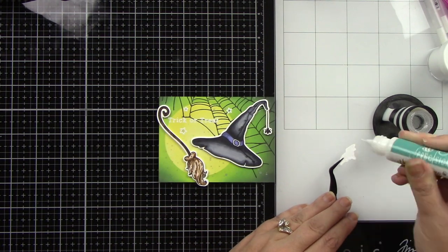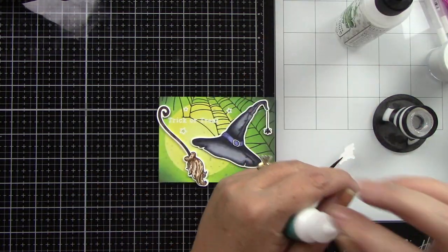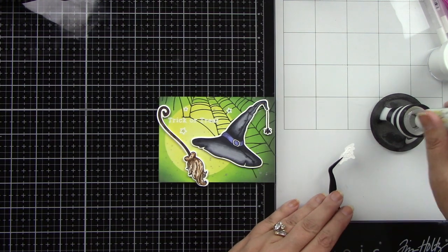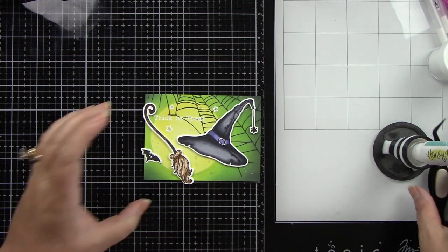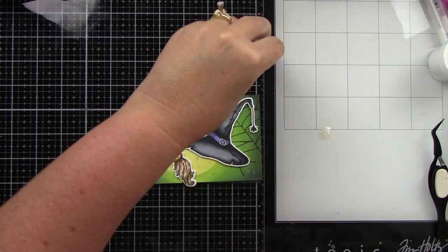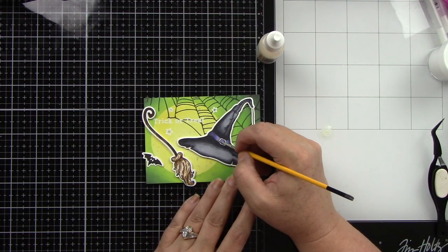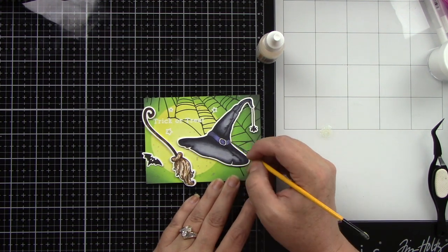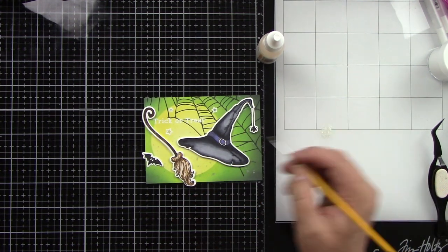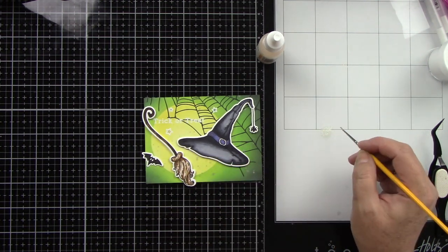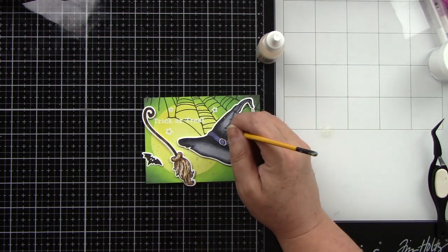This is the Precision Liquid Glue from Honeybee Stamps. I'm adhering him down. I won't trim off the excess—I'll leave that alone. I'm adding more Bee Shimmery to the purple band on the hat, then dots to the bottom of the broom and a little to the hat.